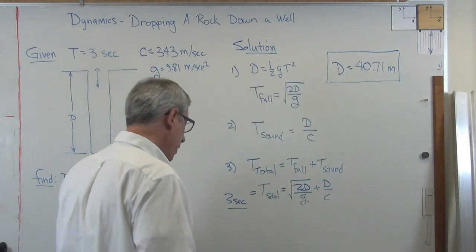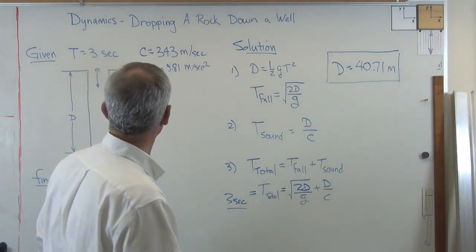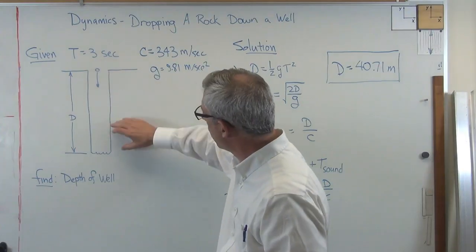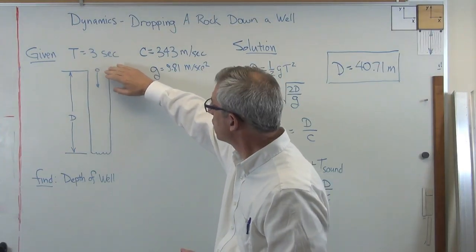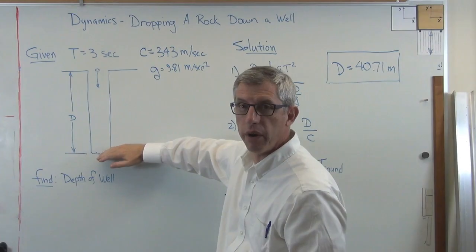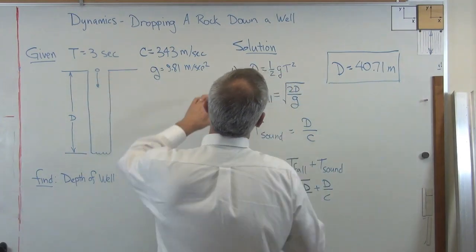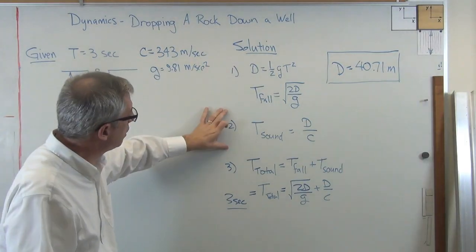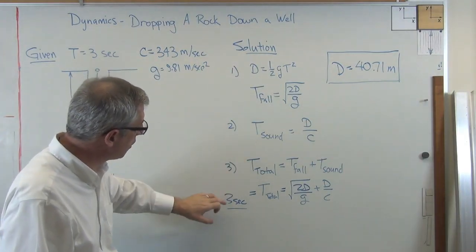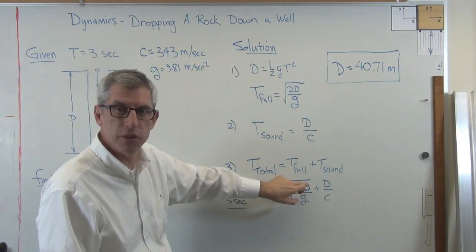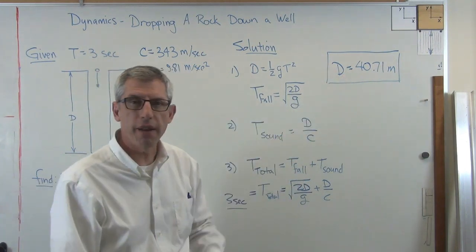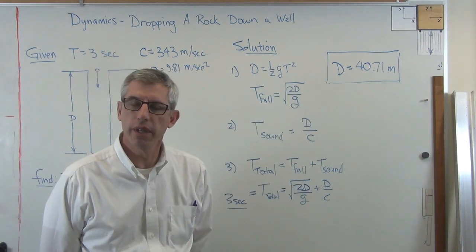Okay, there we go, simple answer. So let's just review here. We have a well, drop the rock, so we're going to write an expression for how long it takes the rock to hit the water, another expression for how long it takes the sound to come back up again. There's the first, there's the second. Add the two together, set them equal to three, solve for D, and you get that. Hope this helps and I'll see you again next time.